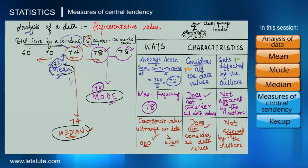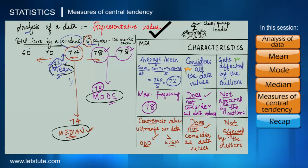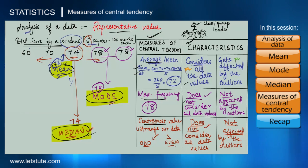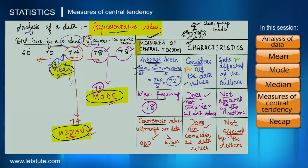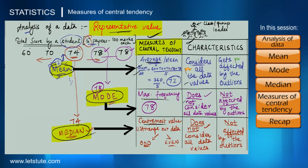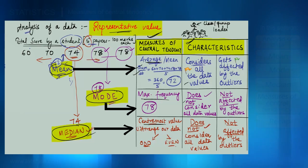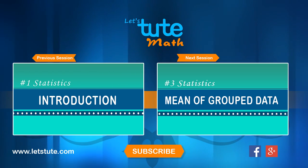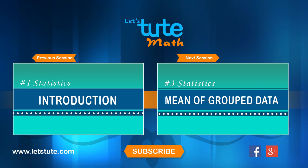In statistics, all these ways — mean, mode, and median — which help us find the representative data value are referred to as the measures of central tendency. To recap: to find the representative value, we have tools called measures of central tendency. Mean takes the sum divided by the total number of values; mode considers the maximum frequency; and median considers the centermost values. We also learned the characteristics of each, which will help us decide which measure to use. In our next sessions, we will learn how to find mean, mode, and median for large or grouped data.